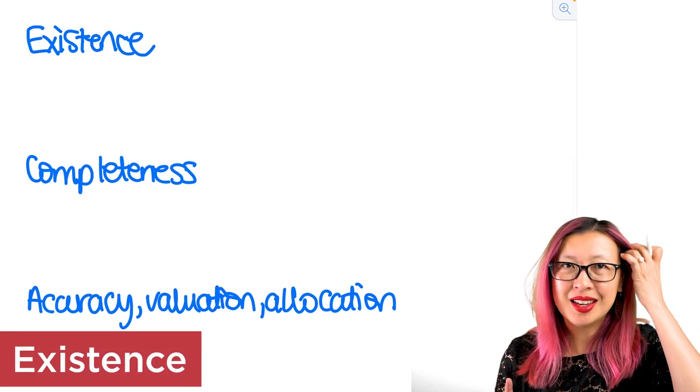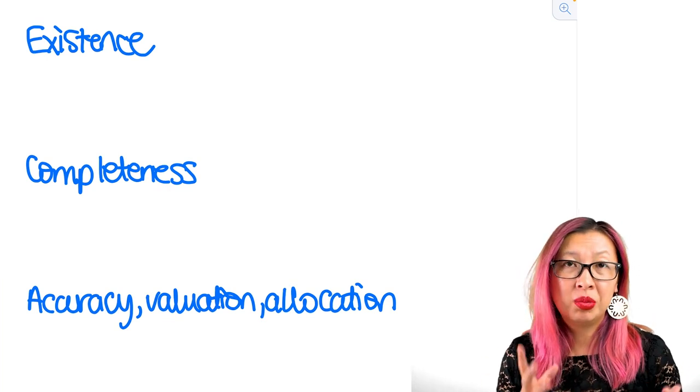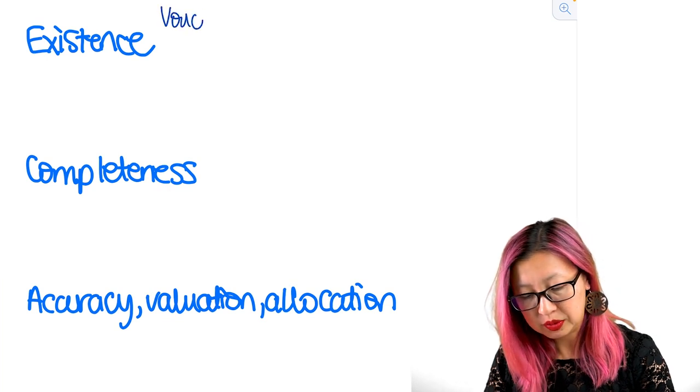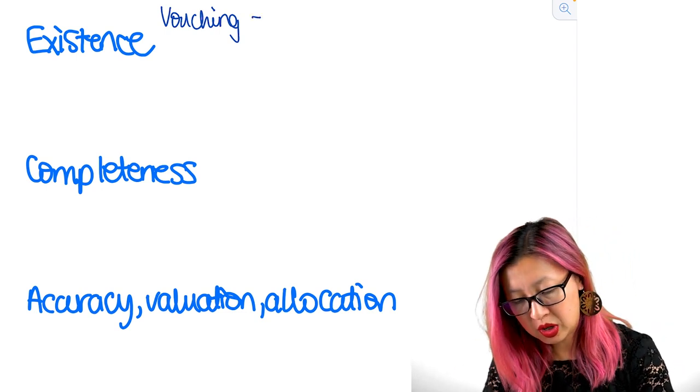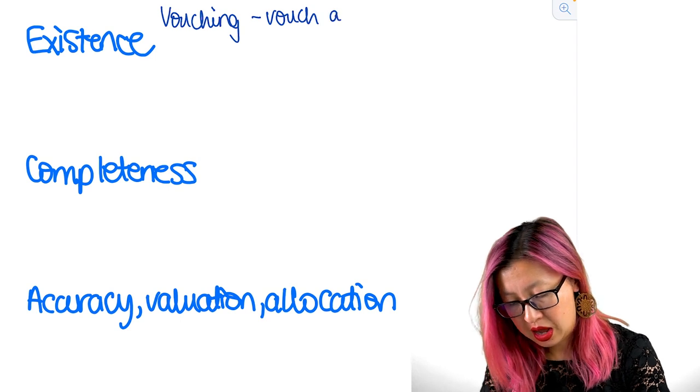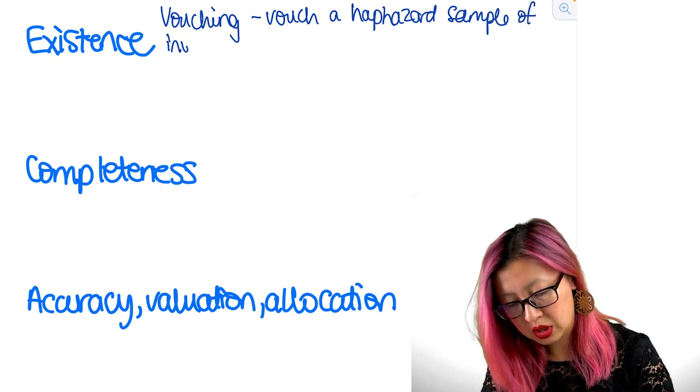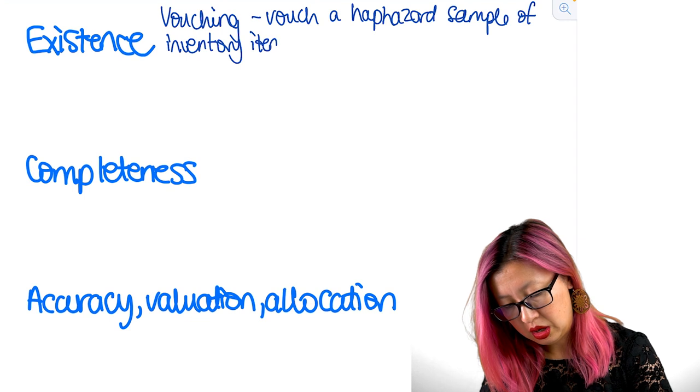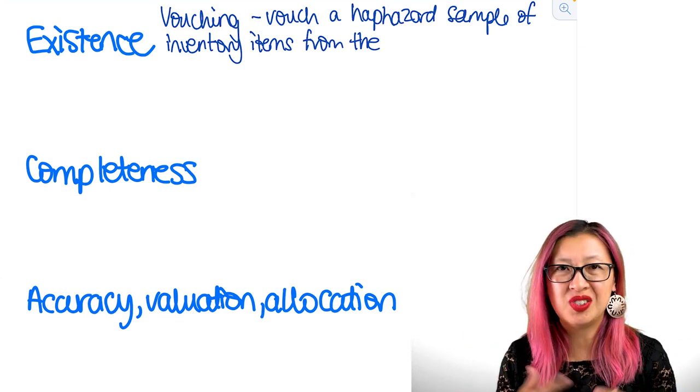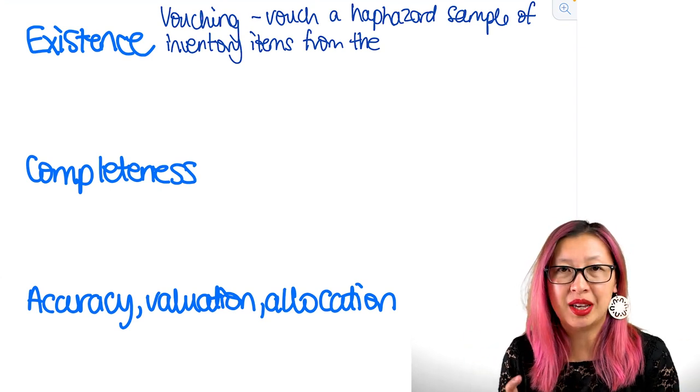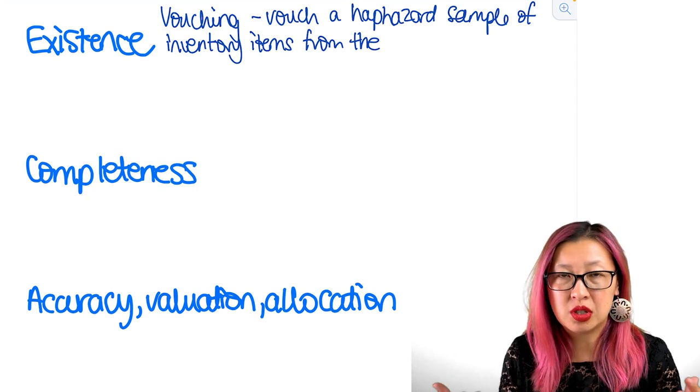So let's start with existence. Does the inventory really exist? Is it really there? It says it's on the balance sheet. So we know that for existence this is normally a procedure where we would use some vouching. Vouching typically means we need to start at the records, the accounting records. So we're probably going to vouch a haphazard sample of inventory items from the inventory listing, and match to physical items. It could have a different name at your specific client or in your specific jurisdiction.